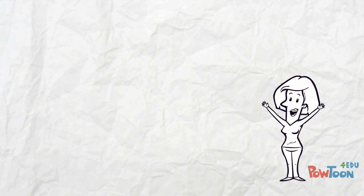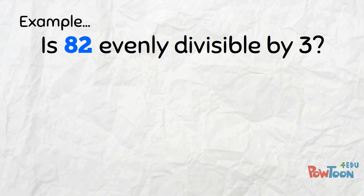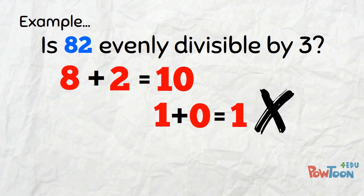That's a handy trick and a time saver for everyone! Let's do an example and see how it works. Is 82 evenly divisible by 3? Split up 82 and add the digits — 8 plus 2 is 10. We know 10 is not divisible by 3, and using the adding method, 1 plus 0 is 1. It doesn't work!